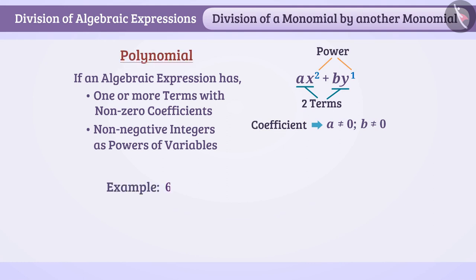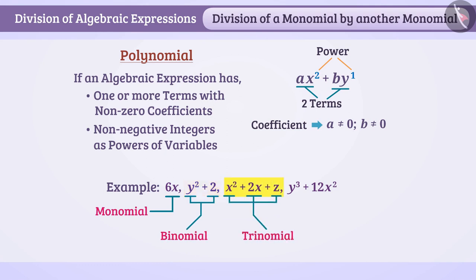For example, these are all polynomials. If there is only one term in an expression, then we call it monomial. An expression with two terms is called binomial. An expression with three terms is called trinomial and so on.